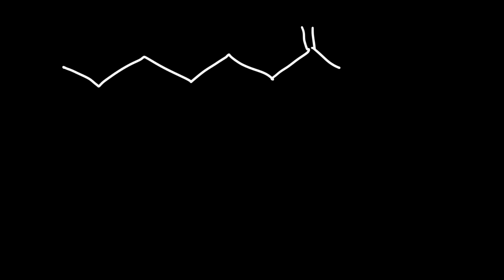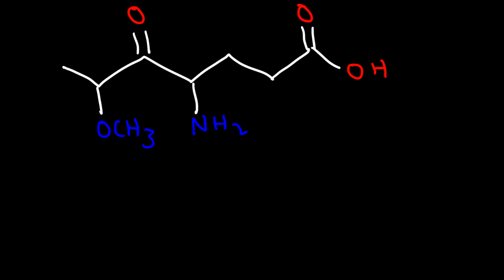Now for our next example, we're going to have a molecule with a ketone functional group, an amine, and also an ether. Go ahead and name the molecule. Carbon 1 has to be the carbon with the carboxylic acid — it has the highest priority. The amino group is on carbon 4. We have a ketone on carbon 5, and a methoxy group on carbon 6.